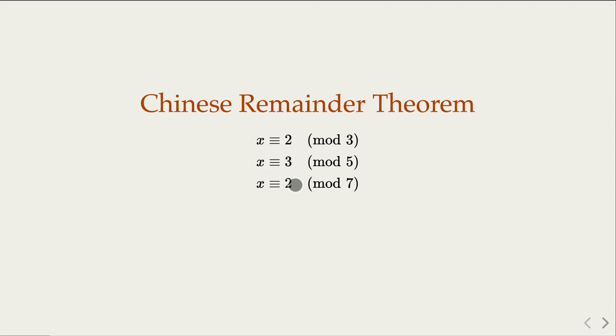And we know that the answer is 23, and multiples of 105N. Now, here 3, 5, 7 are coprime, pairwise coprime. So that's the origin of this Chinese Remainder Theorem.